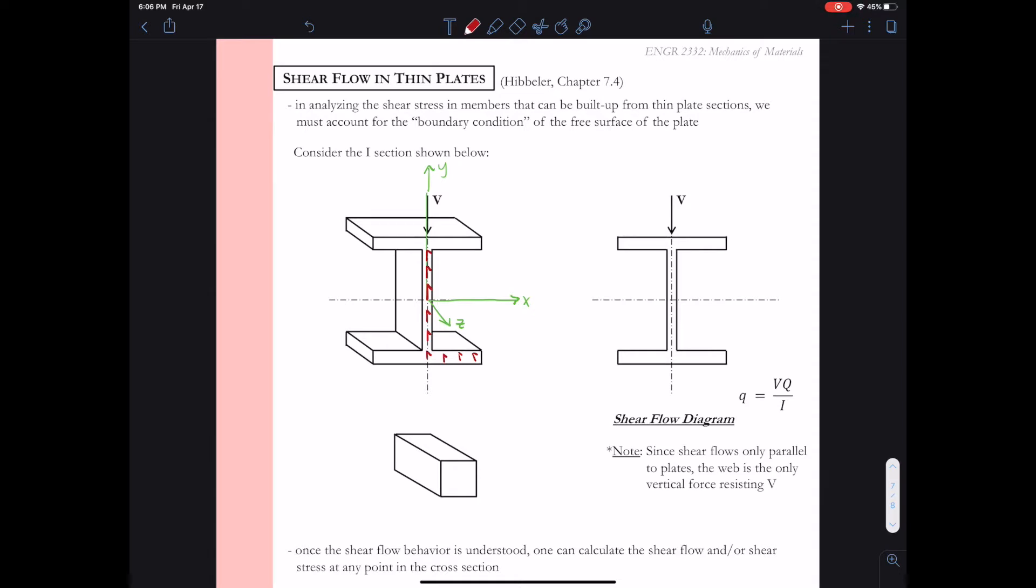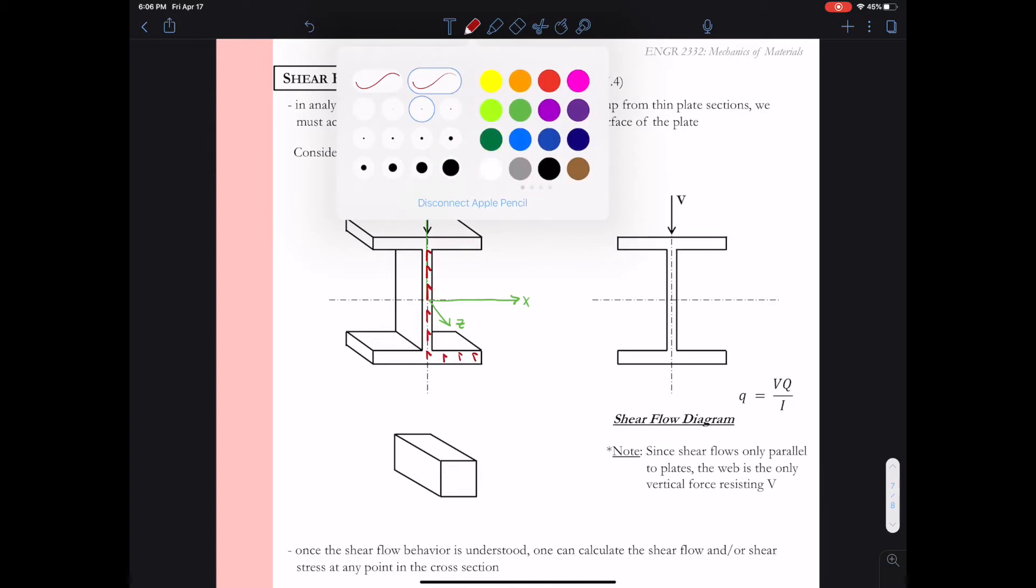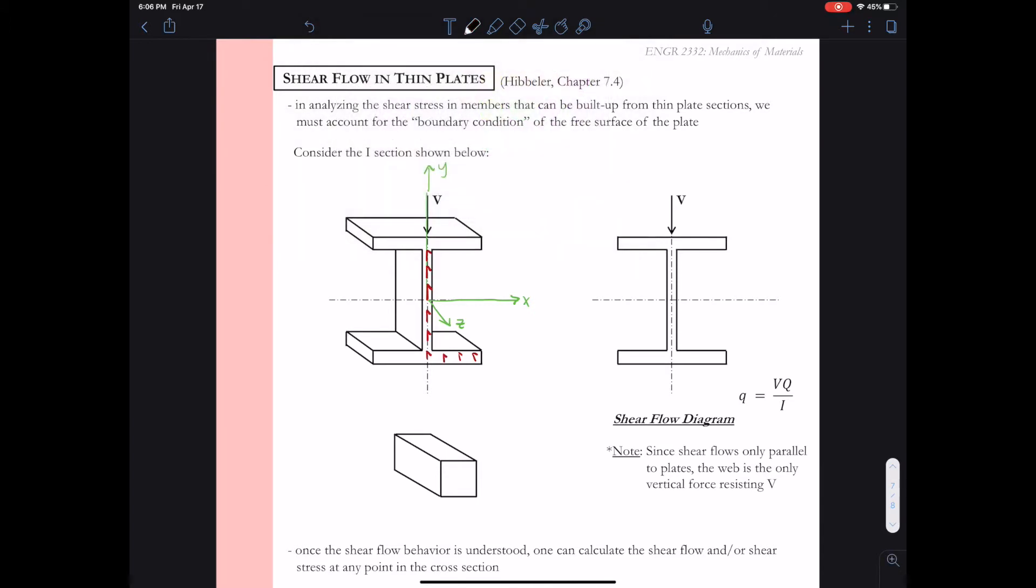Now I want to take a look at one of these shear stresses and draw at the element level. Like we did with plane stress, I want to do the same here in the thin plate cross section. I'm going to take a chunk out of this I-beam, that chunk in black right there.